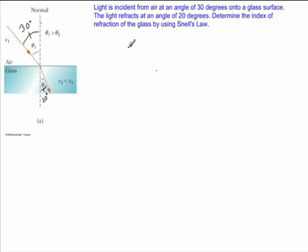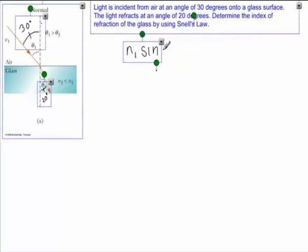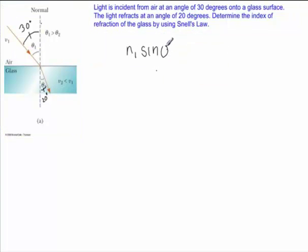So Snell's Law tells us that the index of refraction in region 1 times sine of the angle in region 1 is equal to N2, the index of refraction in region 2, times sine of the angle in region 2.